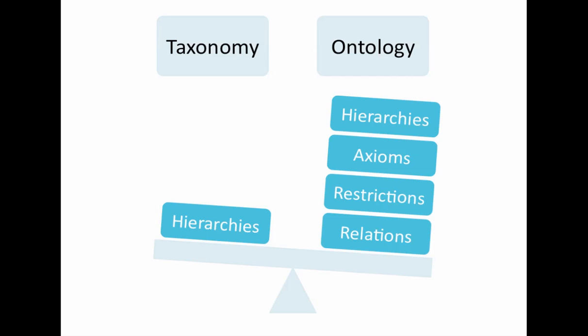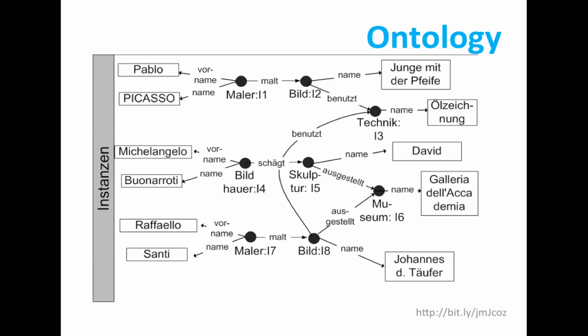Ontologies are the heavy counterpart to taxonomies. They usually exhibit a complex syntax in order to define characteristics, axioms, and restrictions of a vocabulary. So handling ontologies becomes a challenge if one doesn't want to spend much time getting comfortable with this complexity. An example of ontology: let's look at Pablo Picasso.